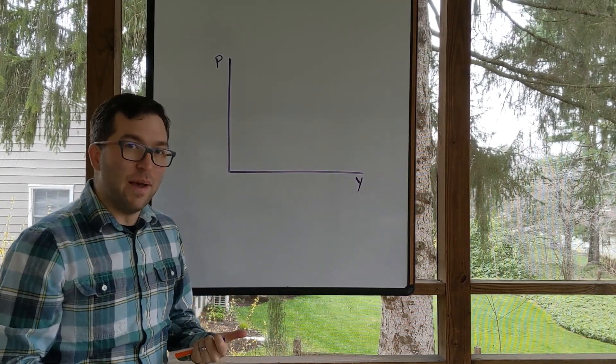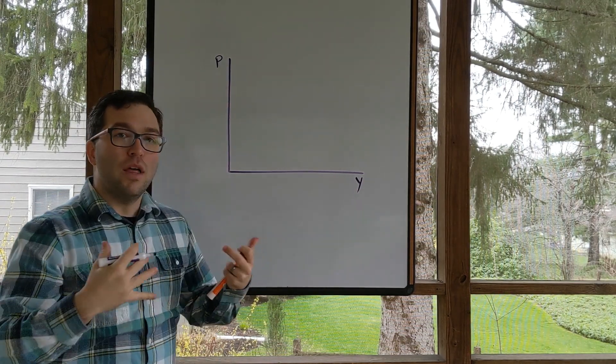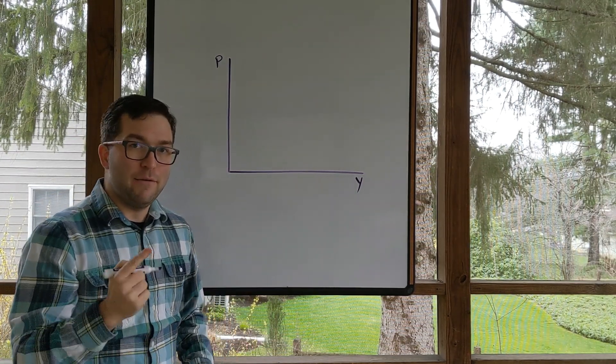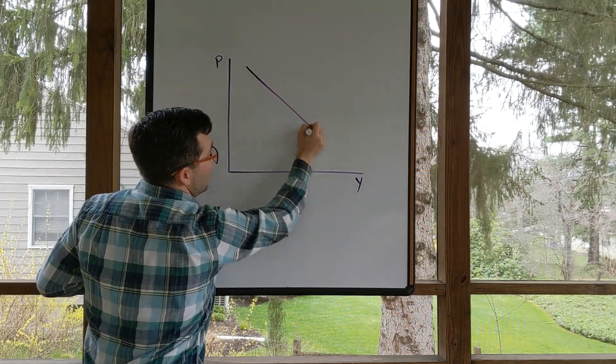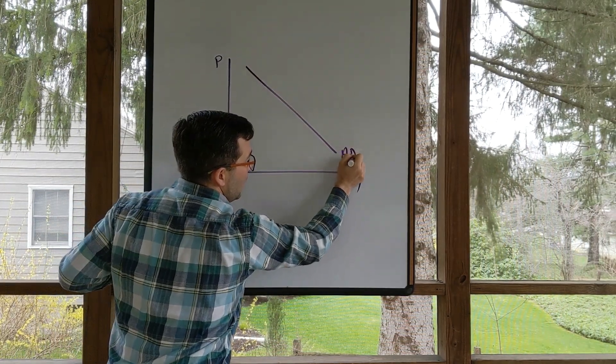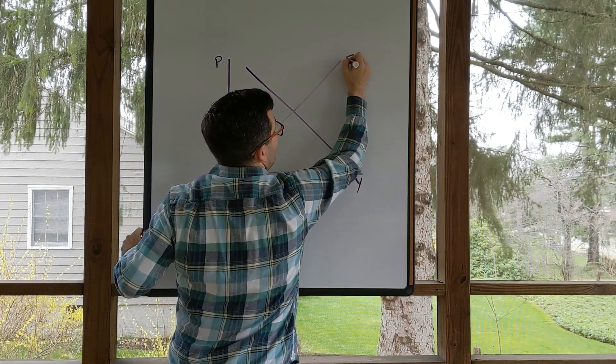We need to draw aggregate demand and short-run aggregate supply first. I would always start with graphing those first. We have aggregate demand as downward sloping and we have short-run aggregate supply upward sloping.